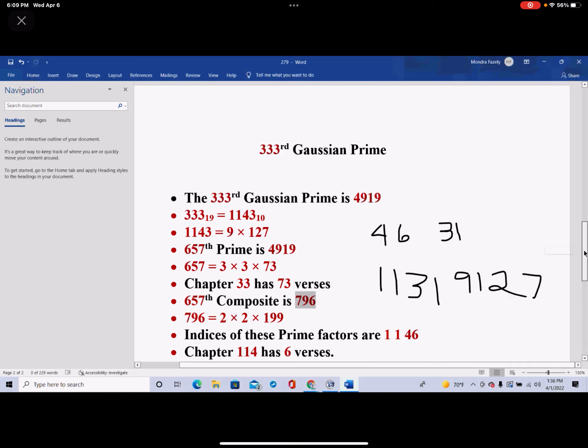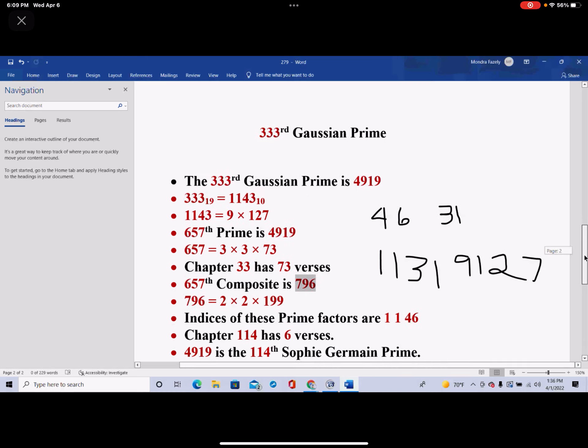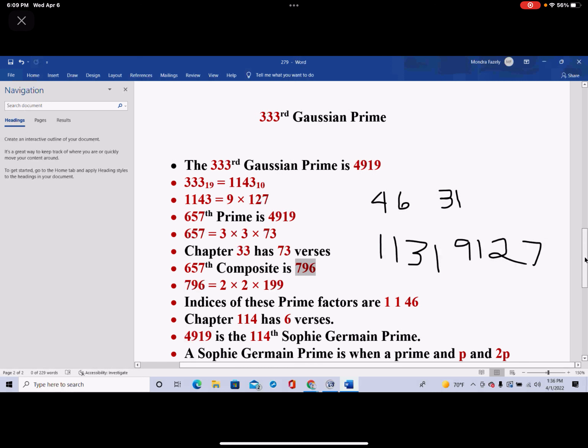So anyway, so I'm going to come down a little bit more. And 4919, how do we know we're talking about the Quran? 4919 also happens to be the 114 Sophie Germain prime. So we've known about this for a long time, about Sophie Germain primes, but never looked at it in this context, really.